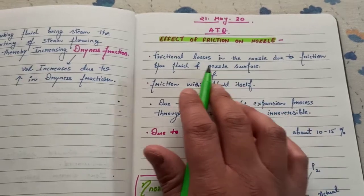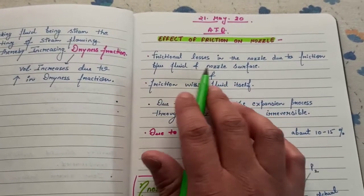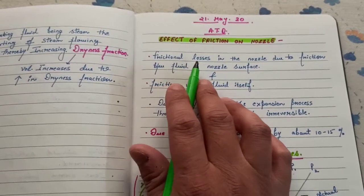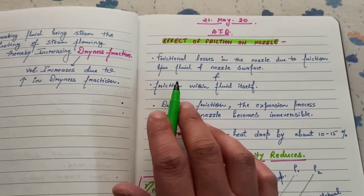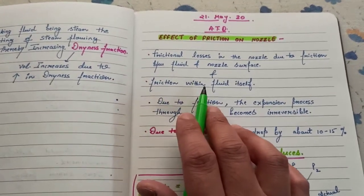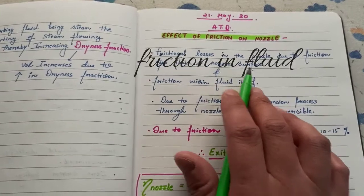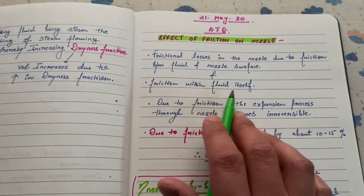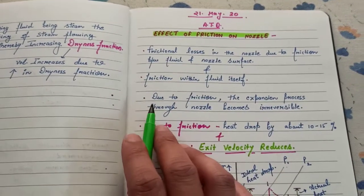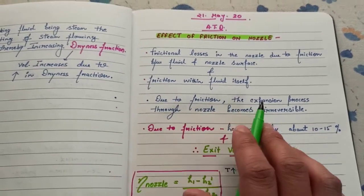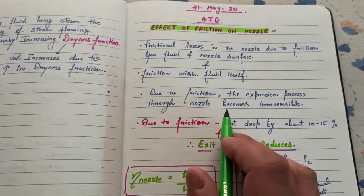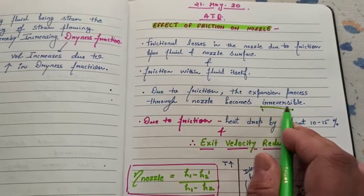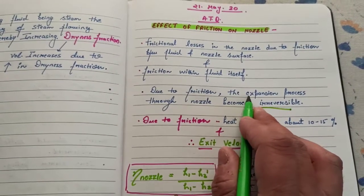Between these two things the frictional losses take place. Second, the friction within the fluid itself causes friction. Due to friction, the expansion process through the nozzle becomes irreversible. That means the expansion process taking place through the nozzle cannot be reversed.